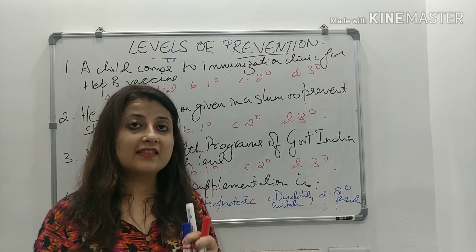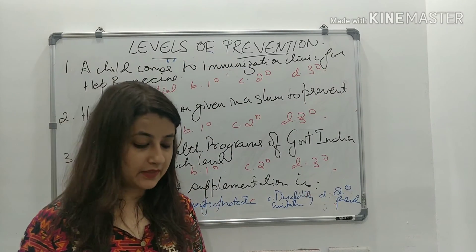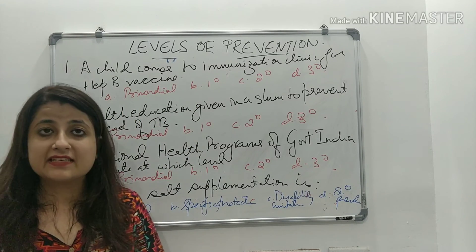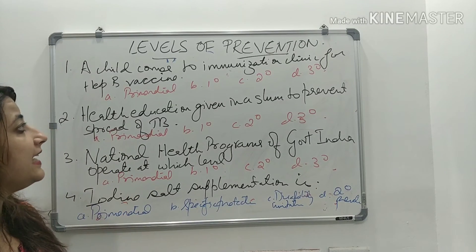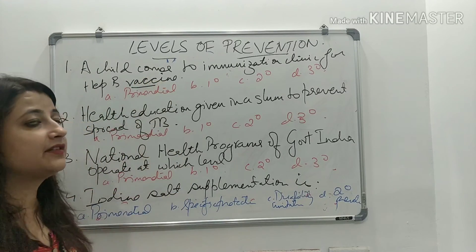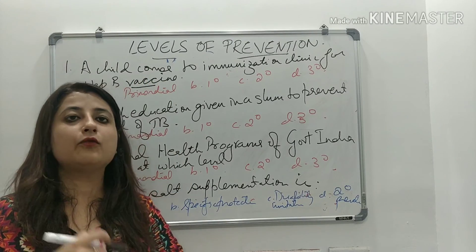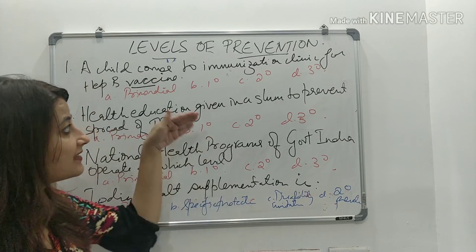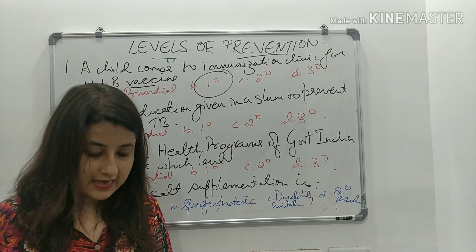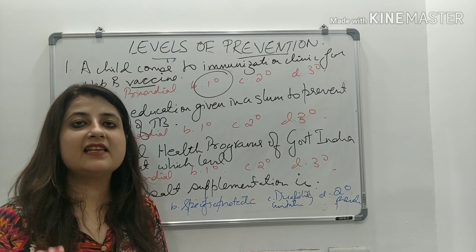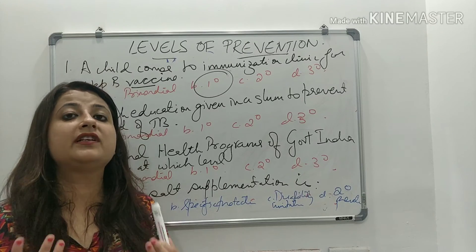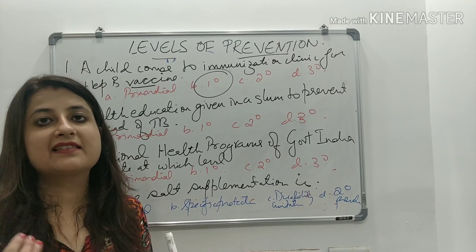Now let us solve MCQs on these levels. First: a child comes to an immunization clinic for hepatitis B vaccine. Any vaccination is a form of specific protection, so vaccination automatically becomes specific protection, which is primary level of prevention. The exception remains BCG vaccine used for treatment of bladder cancer, which becomes secondary prevention.